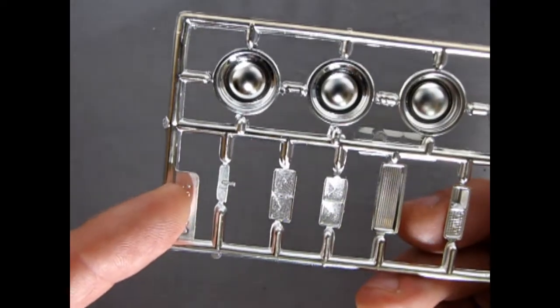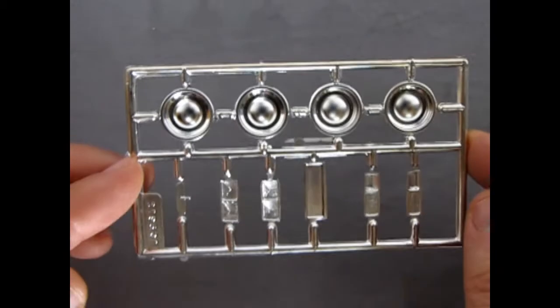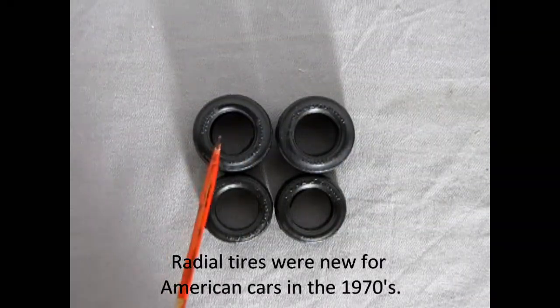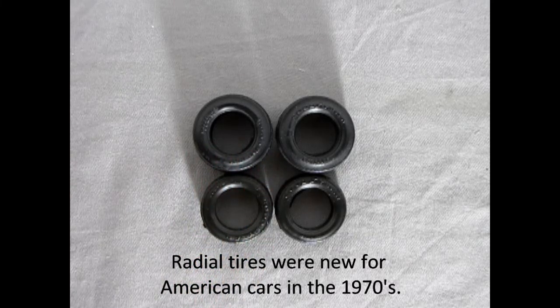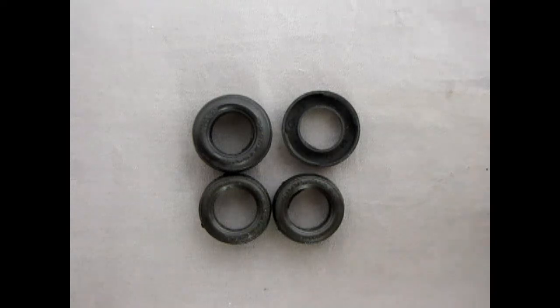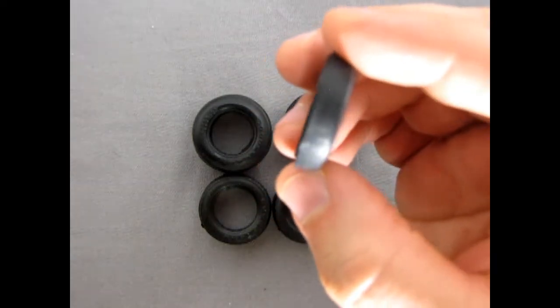Here we have the tires for the kit. And these are Goodyear Rally GTs. And they are two-piece tires. See, like, if I do that. Now they do hook in through the sides.